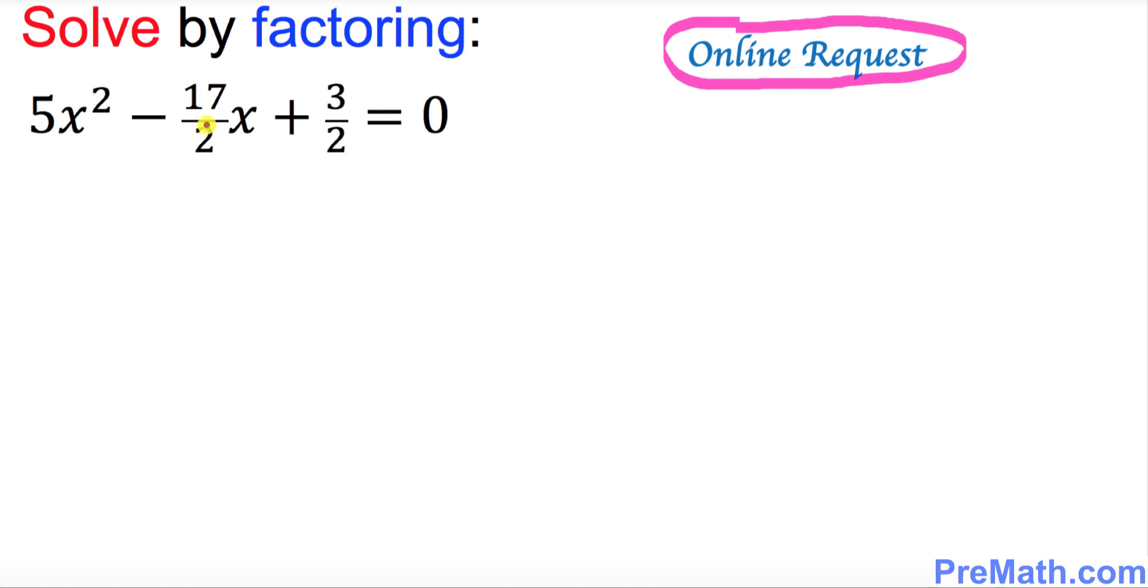Remove these fractions by looking at the denominators, which are 2 and 2. That means our least common denominator is 2, so I'm going to multiply all the way across the board by 2.